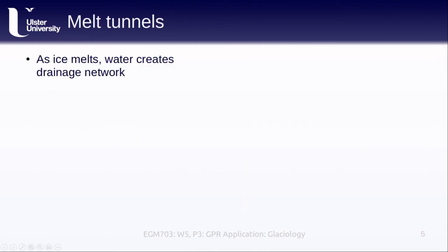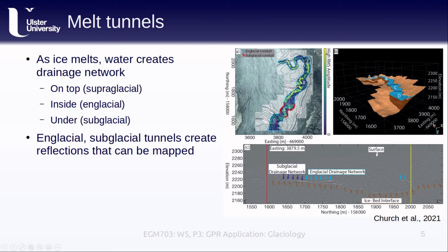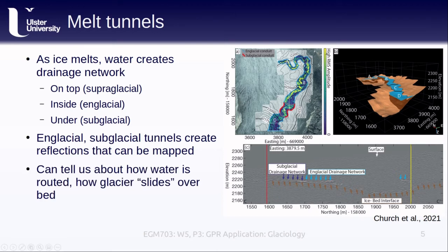As ice melts, meltwater starts flowing, which creates a drainage network on top of the glacier, inside or through the glacier, and also under the glacier. Mapping the routes of surface water is easy enough, but with GPR we can also map englacial and subglacial tunnels, as they create reflections that show up in the radar. This 2021 study shows a great example: with a gridded GPR survey, they mapped the drainage network and estimated how big the tunnels are, which can tell us something about how much water is routed through the tunnels. This also tells us something about how the glacier slides over its bed.